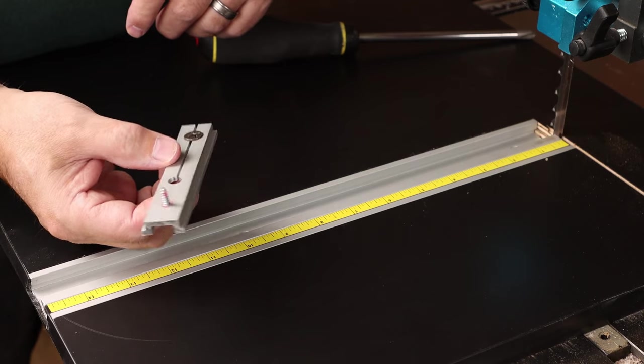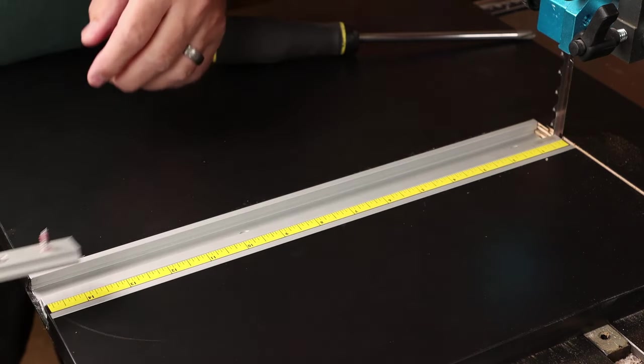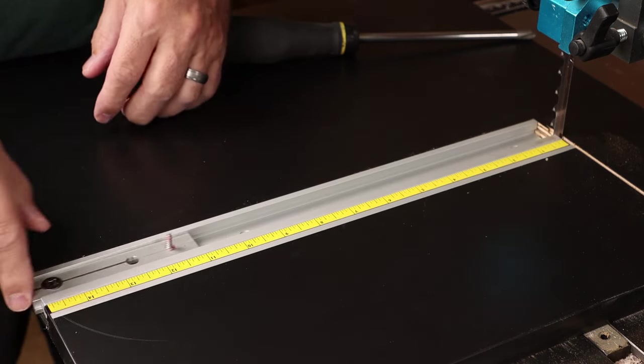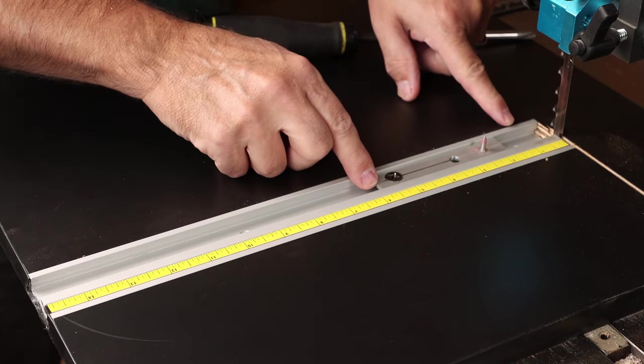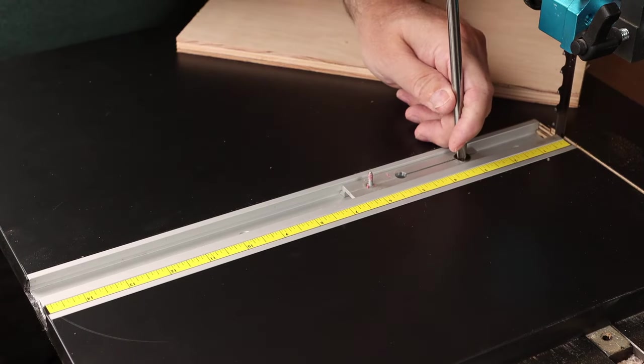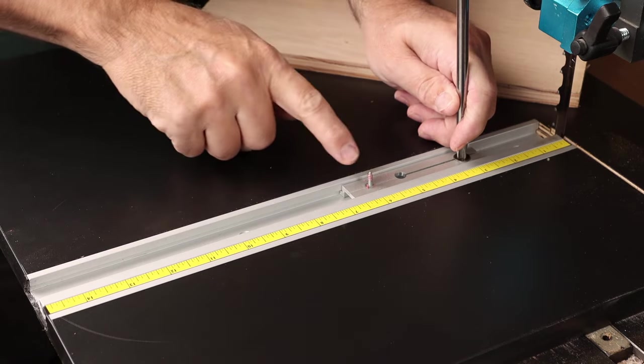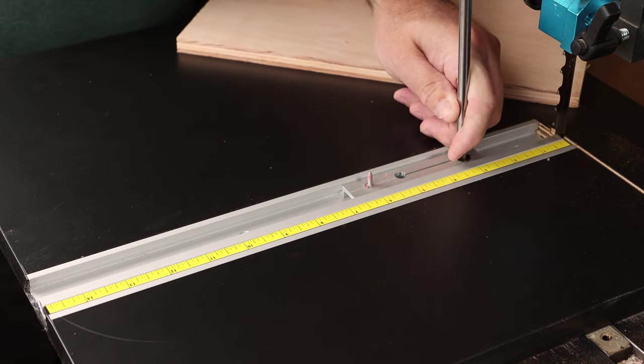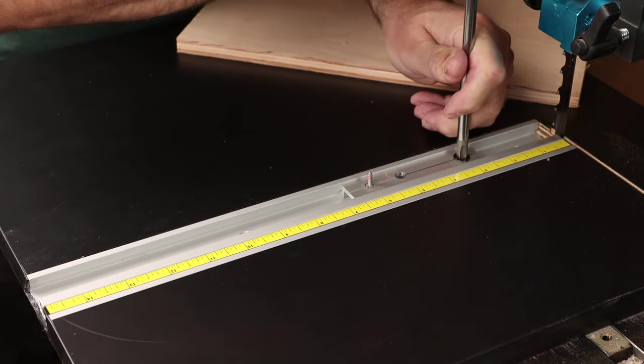If you had a very small circle to cut, you could reverse this miter slider bar so that the center point could get even closer to the blade. Right now, I need to cut a 12-inch circle, so I'll align the screw center point with the 6-inch mark and lock that in place.